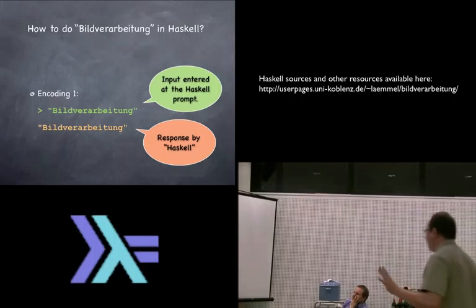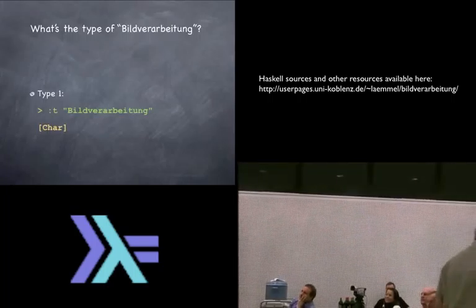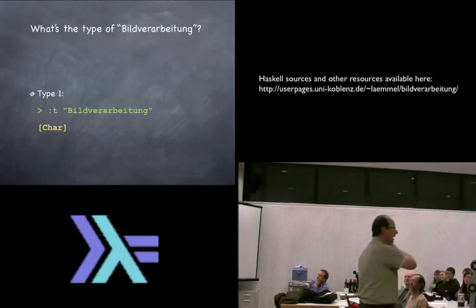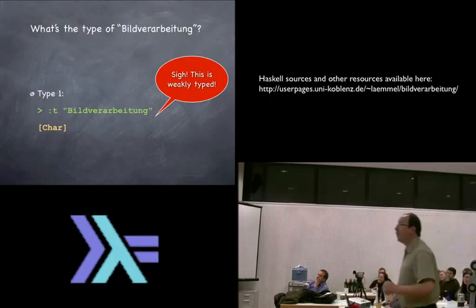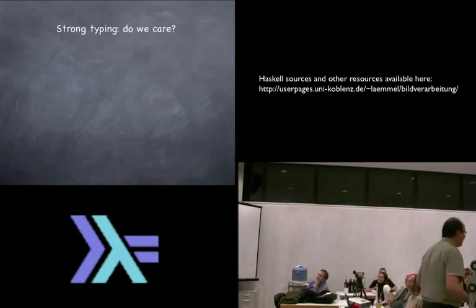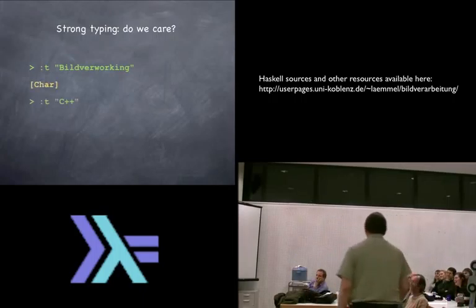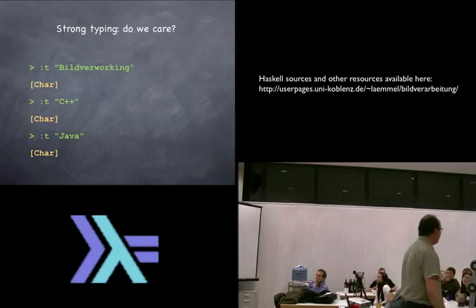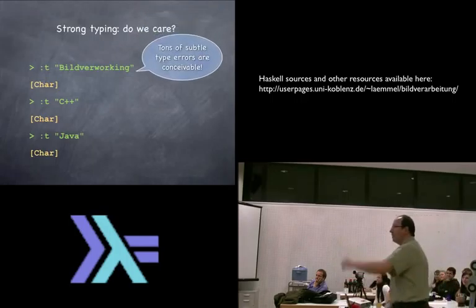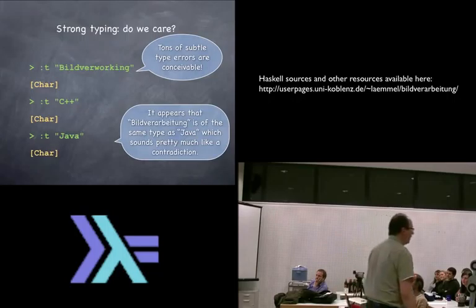You might say, okay, perhaps — what's the problem with it? Well, let's look at the type. The type is telling. The most important thing about programs is the types. The type of Build for Arbeid Oak is a list of characters. This is probably not the right encoding, because something Built for Arbeid Oak has the same type as built for working, or even something like C++. Even Java — just a string, list of characters. All kinds of type errors are suddenly possible and confused things that don't belong together. Wrong type. Wrong encoding.